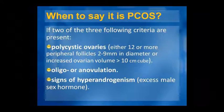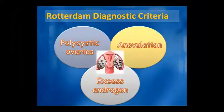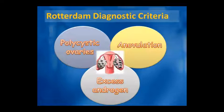The third criterion is hyperandrogenism — male sex hormones are increased in females. According to the Rotterdam diagnostic criteria, diagnosis requires polycystic ovaries, anovulation or failure to release ovules, and excess androgen in females.